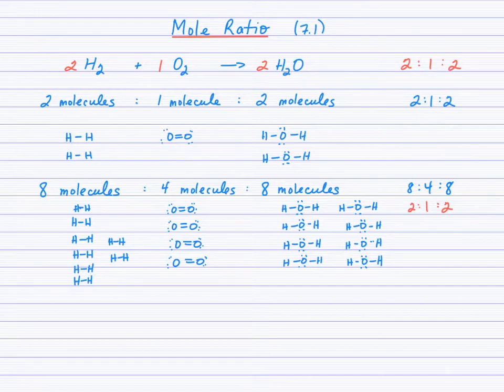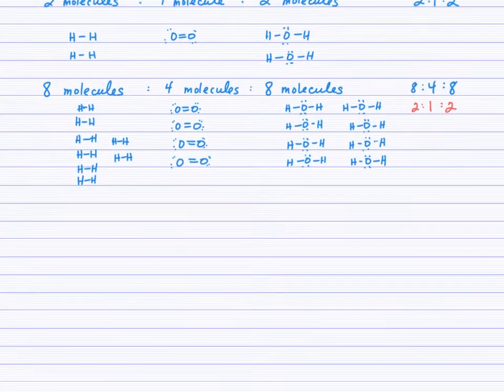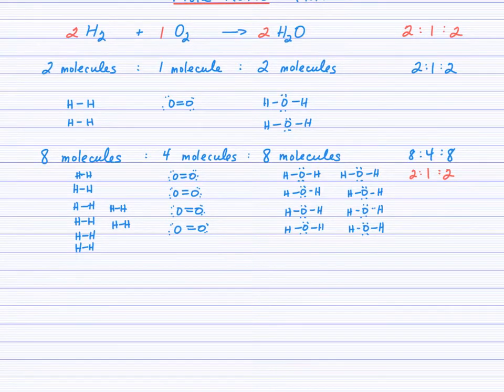It gets tedious drawing everything out, so what if we had 12 molecules? Working with that 2:1 ratio, 12 to 6 would be in a ratio of 2:1, producing 12 molecules of water. Isn't 12 of anything really just one dozen? So instead of writing 12, I'll write one dozen.